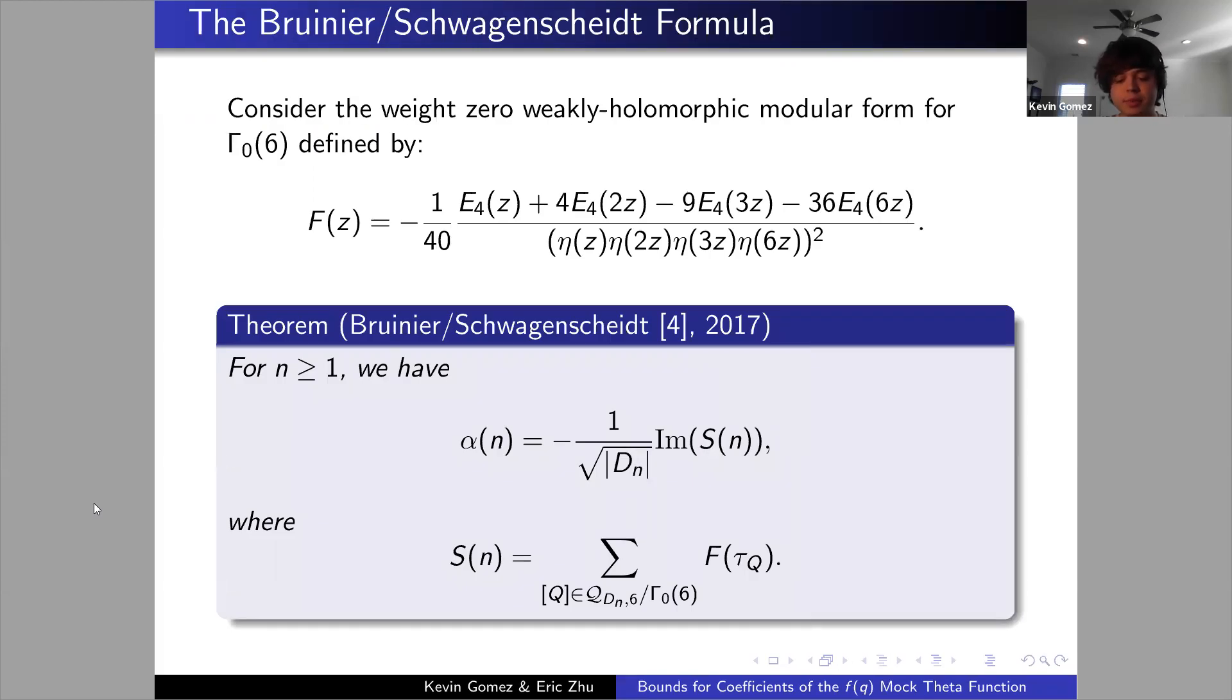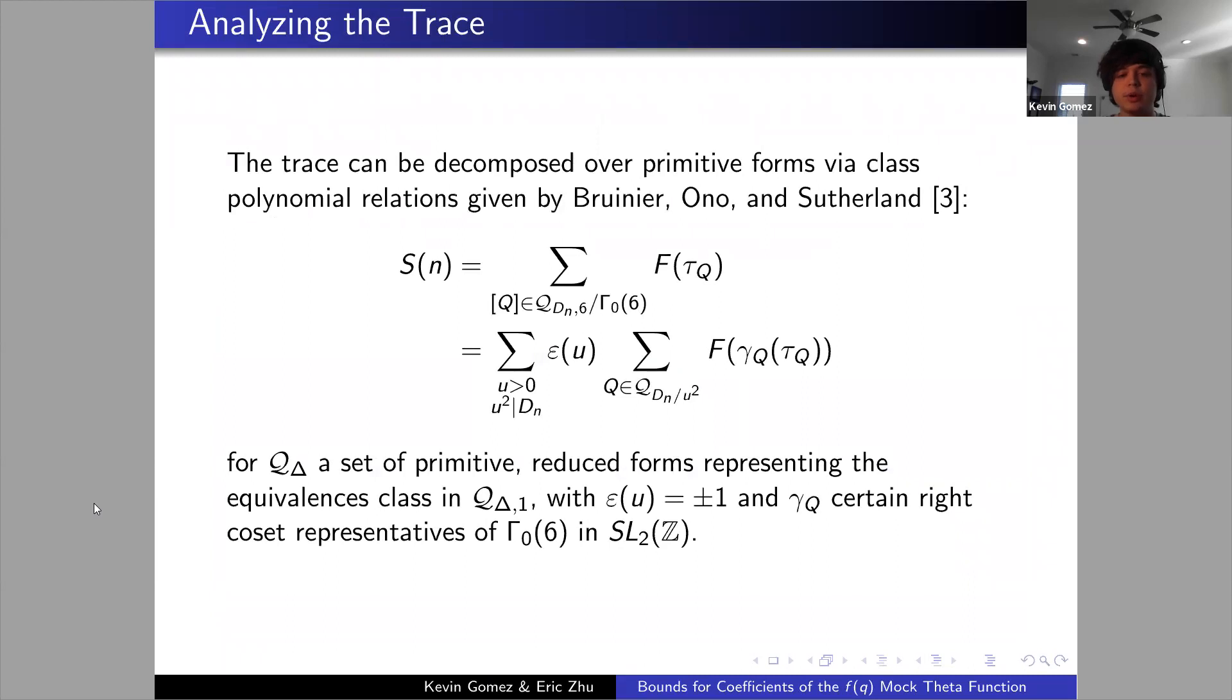All this algebra wouldn't necessarily be helpful though if we didn't have some way to bring it back. That's using the result due to Brunier and Schwagenscheidt, which is that alpha of n can be given as a finite algebraic sum as a trace over this particular weight zero modular form on Gamma_0 of 6. This is a very interesting result. We don't really have similar results like it for other ranks, so the fact that we have this and the ability to use it is really striking and important. We are going to make use of it. We can decompose it over primitive forms using some class polynomial relations.